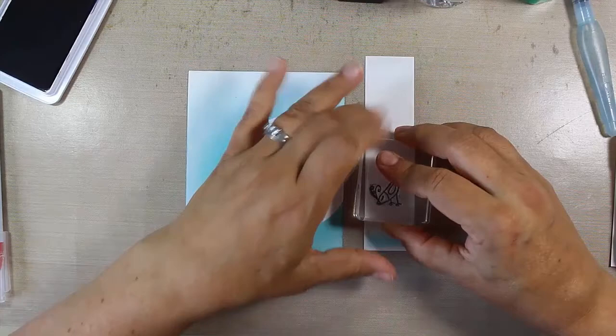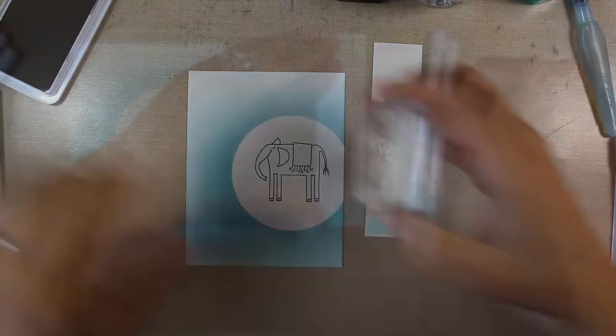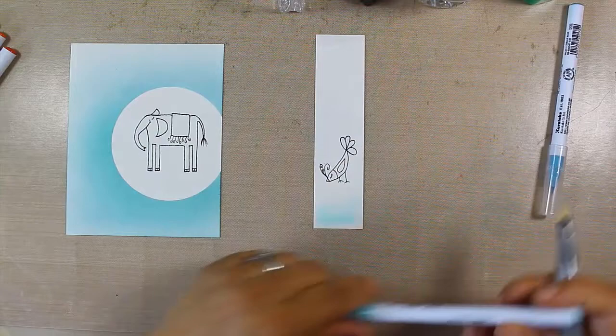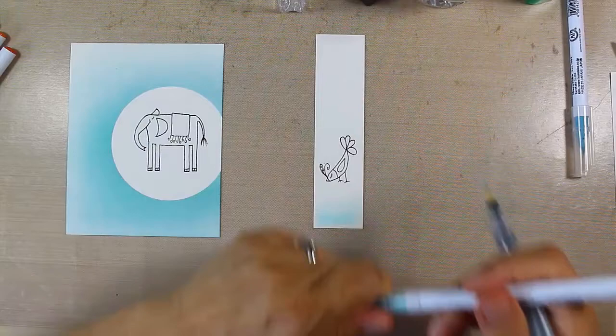I have my little bird, and because he's going to be overlapped here up higher, we're going to stamp him on a piece of scrap paper, watercolor him, and then cut the bird out. There are a couple ways that you can watercolor. You can go direct to your paper. I have two shades of blue here, light blue and cobalt blue.